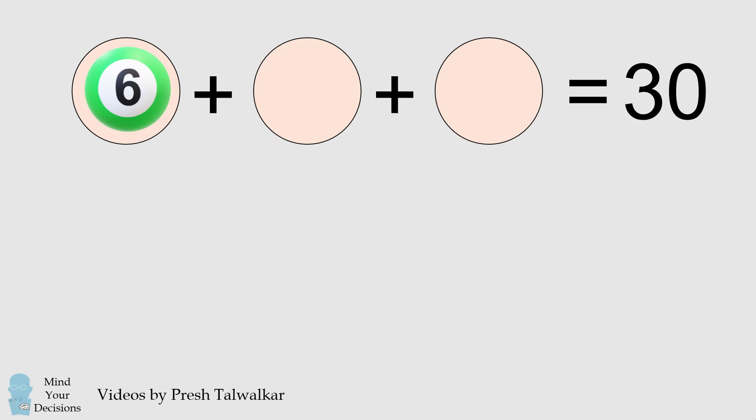We then solve the puzzle by adding the numbers 11 and 13. 6 plus 11 plus 13 is equal to 30. And that's the answer to this puzzle.